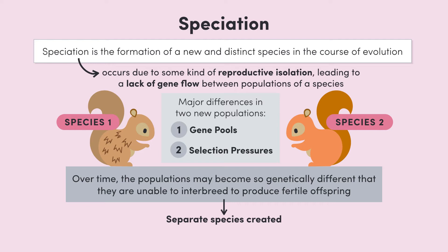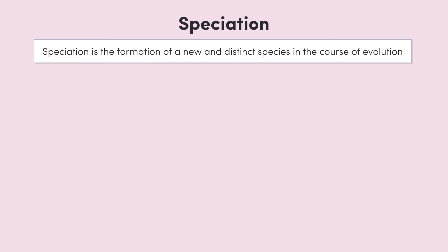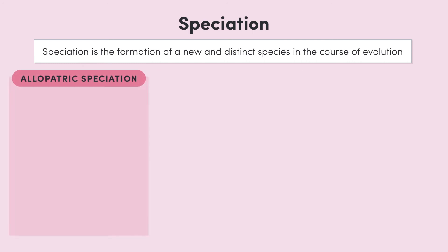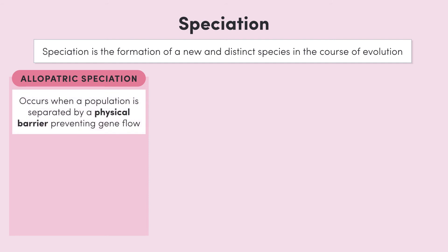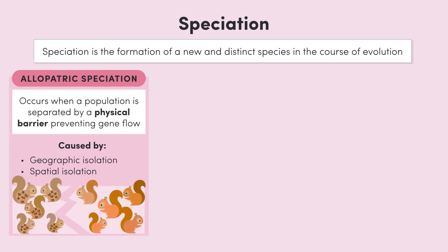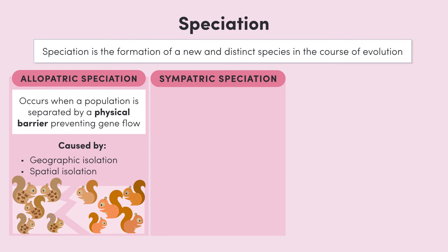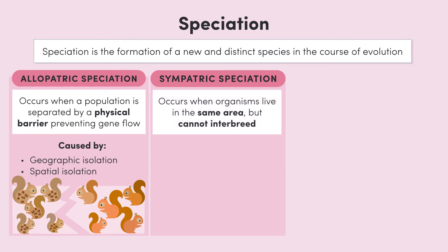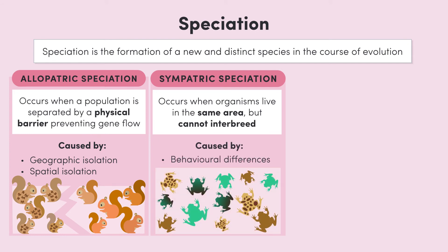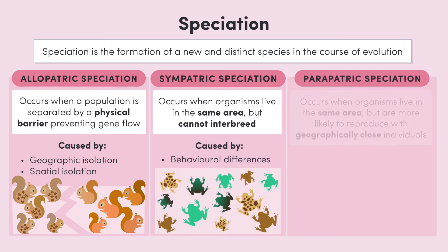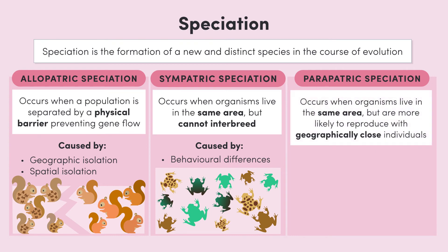There are different types of speciation. Allopatric speciation is where a population is separated by a physical barrier which prevents gene flow — it's due to geographic isolation or spatial isolation. Sympatric speciation occurs when there's no physical barrier; organisms live in the same area but can't interbreed due to reasons such as differences in behaviour. Parapatric speciation occurs when organisms live in the same general area but are more likely to reproduce with individuals close by, and a gradient of characteristics develops.